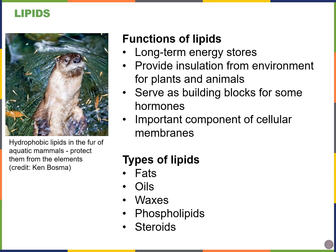Lipids are also pretty diverse in their functions. We can store long-term energy in the form of lipids, and they can provide both physical and temperature insulation from the environment. For example, there are a lot of lipids in the GI tract. Lipids are important to build several types of hormones and also they're a main component of our cell membranes. We're going to go over many types of lipids like fats, oils, waxes, phospholipids, and steroids.